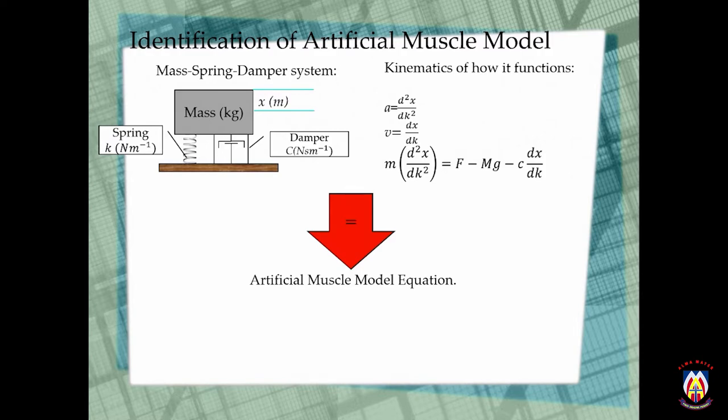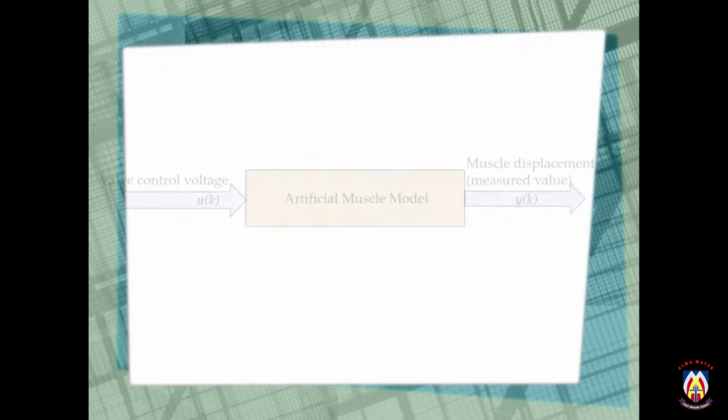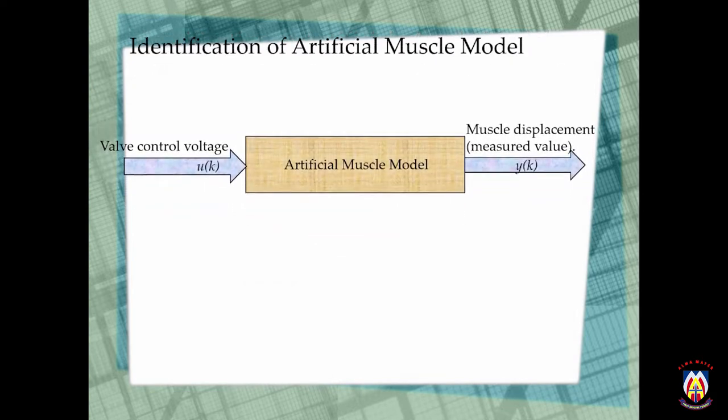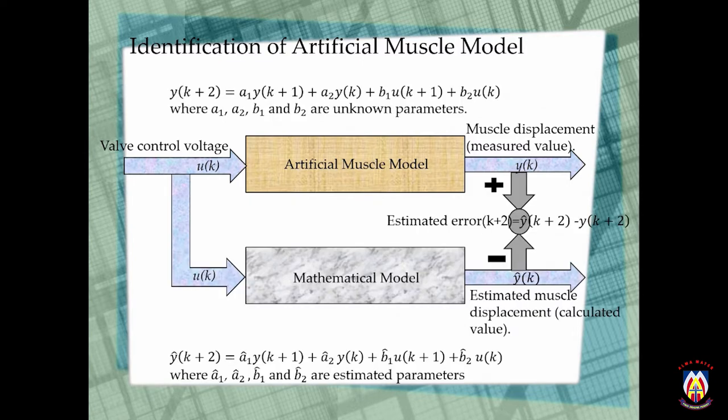So to formulate the artificial muscle model equation, we used a set input and then we measured the muscle displacement. So then after obtaining those two, we could formulate an equation for the artificial muscle model, where our unknown parameters are a₁, a₂, b₁ and b₂.